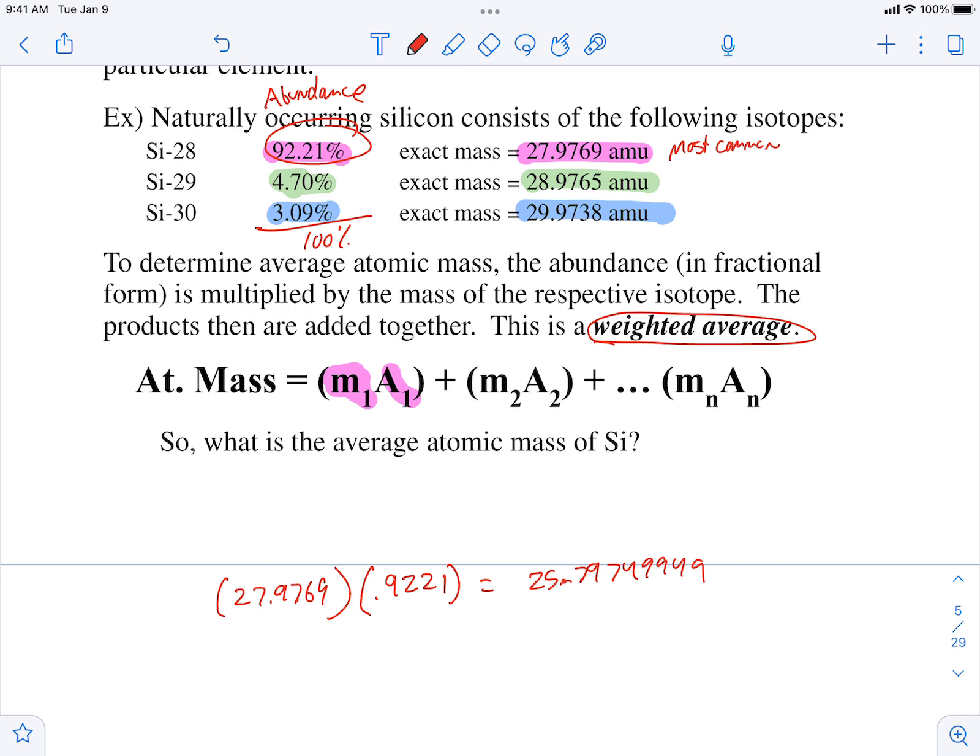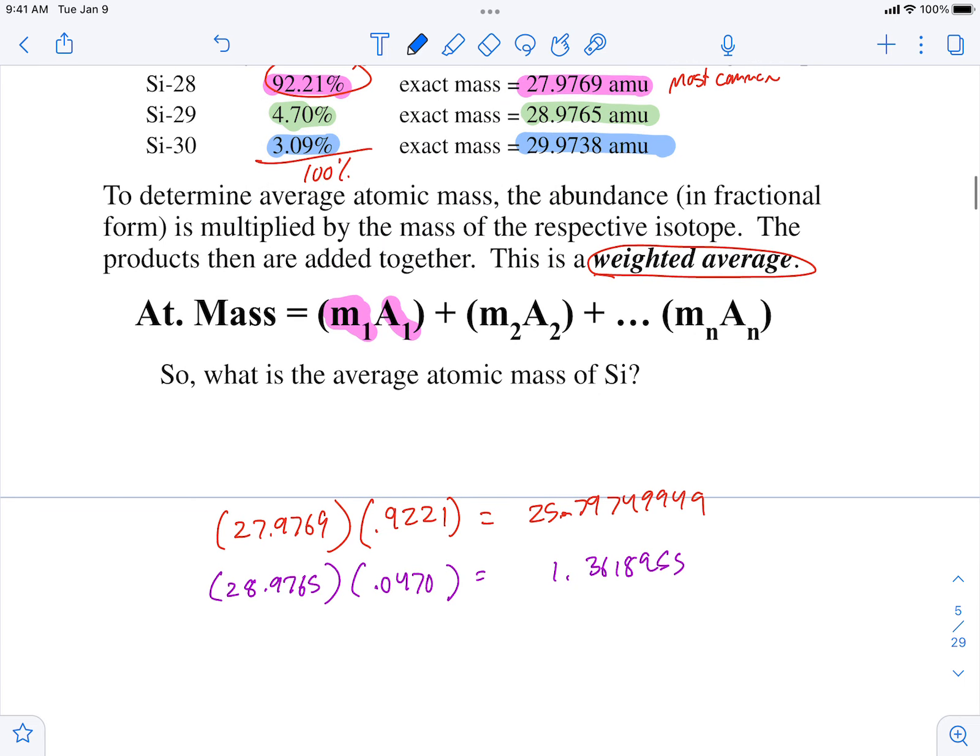Now the second number, 28.9765 times, what's 4.7% in decimal form? In decimal form? Kayla? Yeah, right. 0.047.